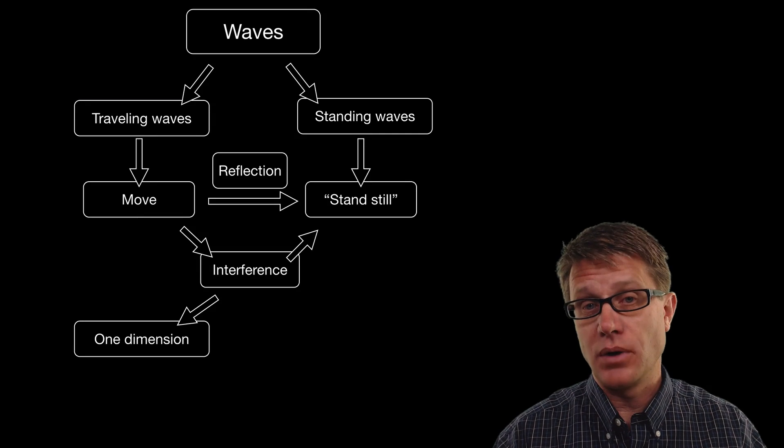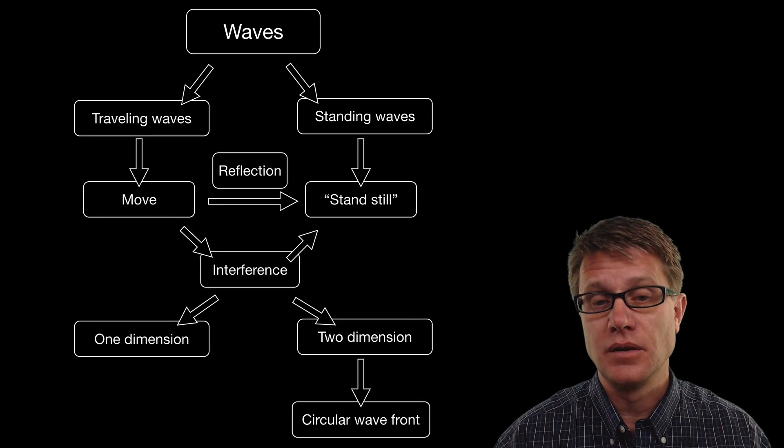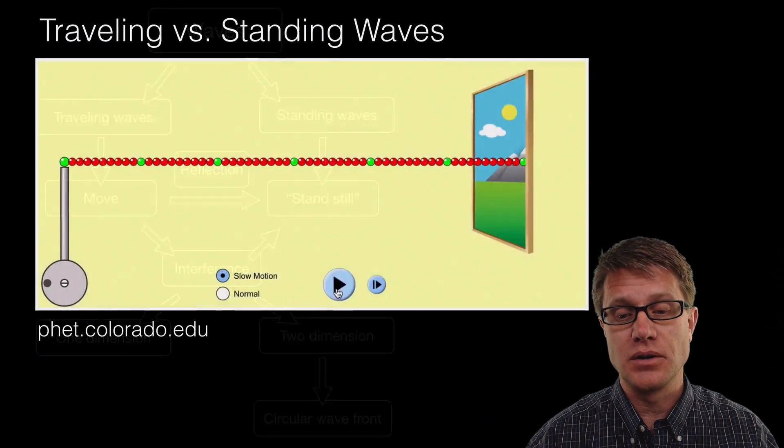You should understand how we could get one-dimensional interference between traveling waves and also two-dimensional traveling wave interference. You get what's called a circular wave front, and then you can get these interference patterns.